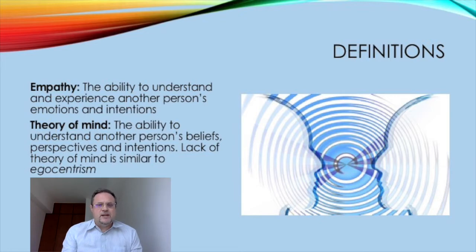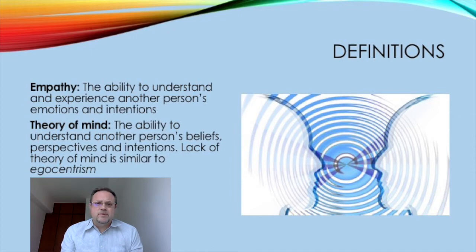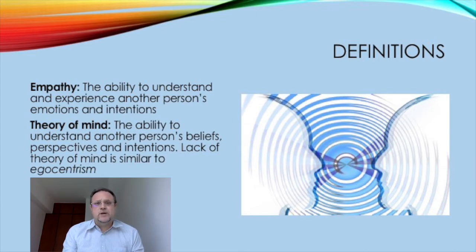Empathy can be defined as the ability to understand other people and their experiences and emotions. Theory of mind is an aspect of empathy — you could say it's the cognitive aspect of it — and it's the ability to understand another person's intentions. Young children are usually quite poor at theory of mind because it's not fully developed yet.